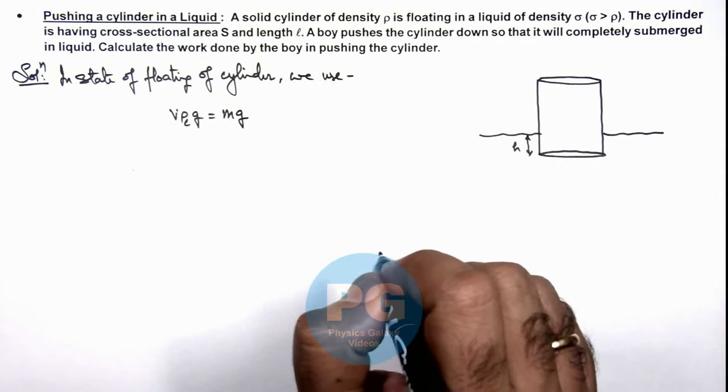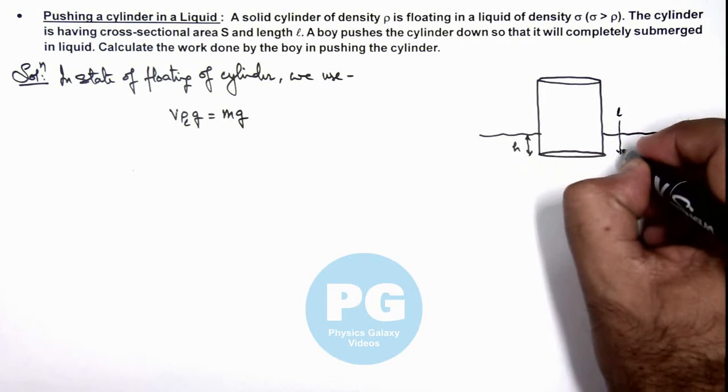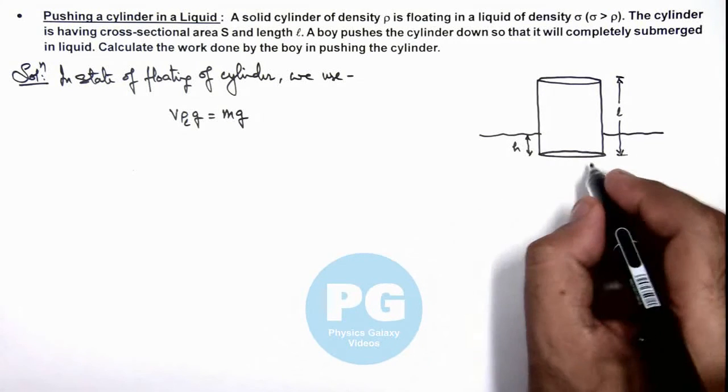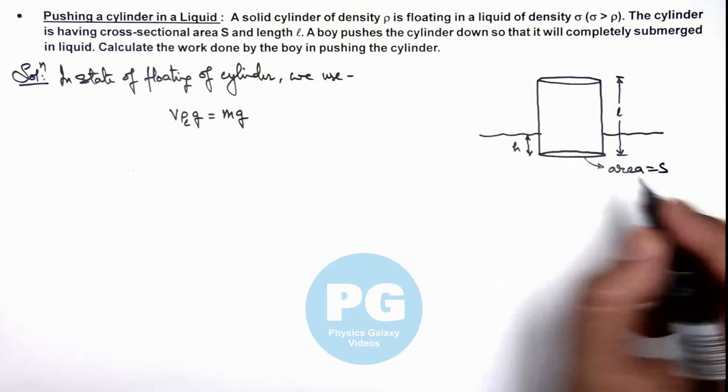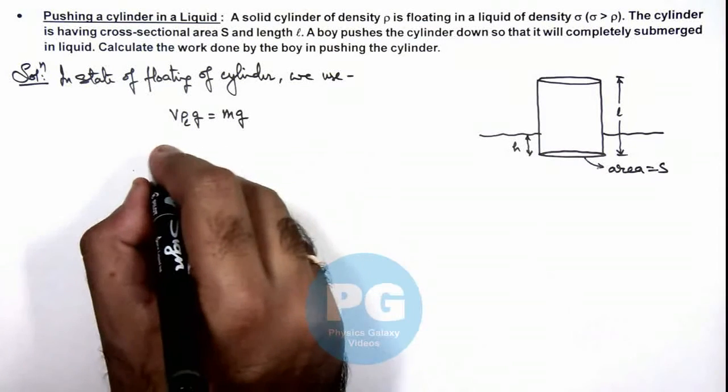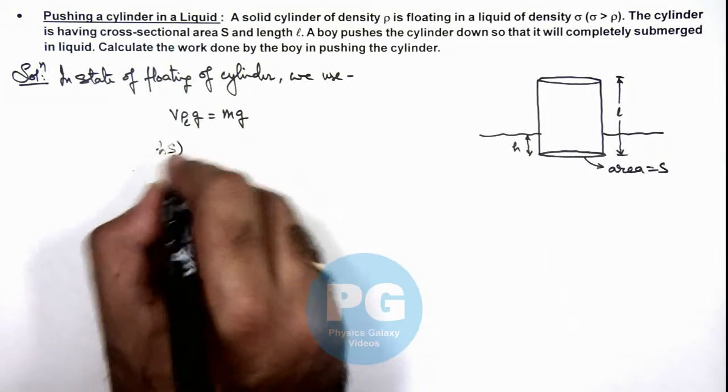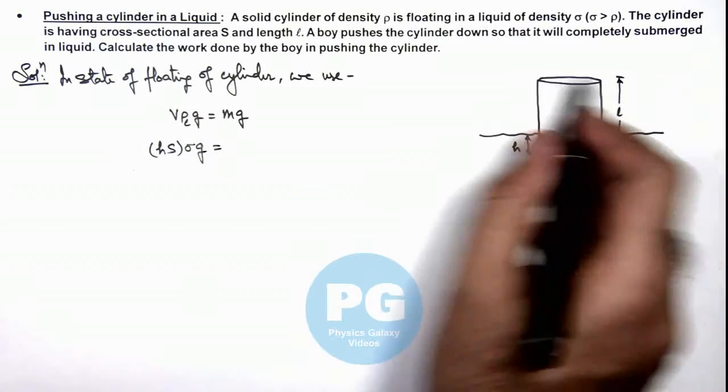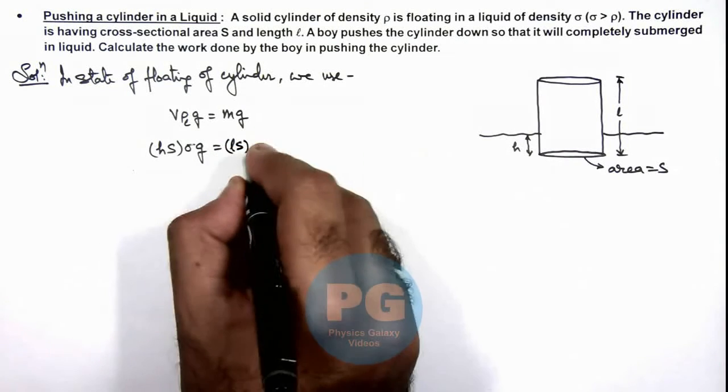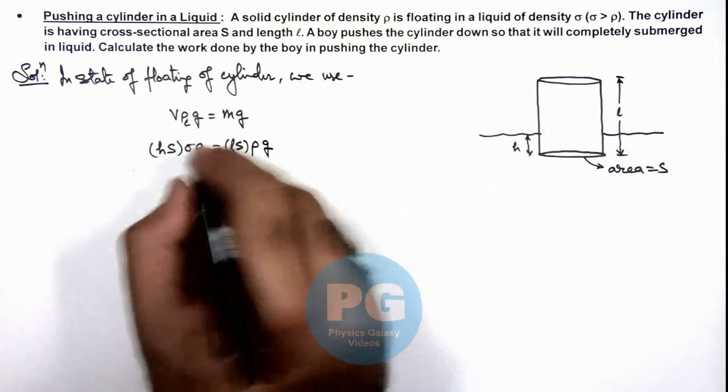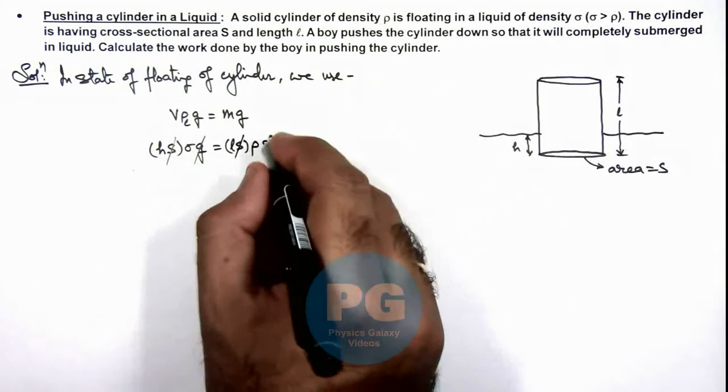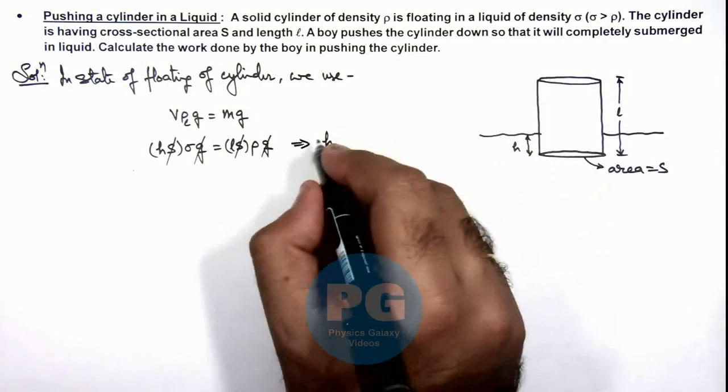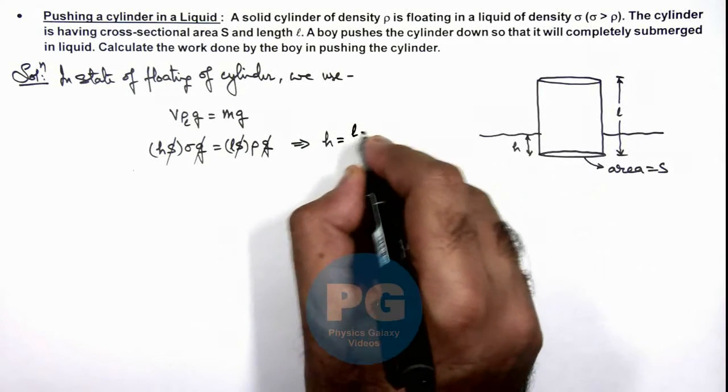Now in this situation we are given that the cylinder length is L. If we consider it is submerged to a depth h, and its cross-sectional area is also given to us as S, the volume of the submerged part we can write as h times S multiplied by density of liquid which is given to us as σ multiplied by g is equal to the mass we can calculate as L times S total volume multiplied by ρ density of solid multiplied by g. Here S and g get cancelled out, and this will give us the submerged part of cylinder within liquid and this h is equal to L times ρ by σ.